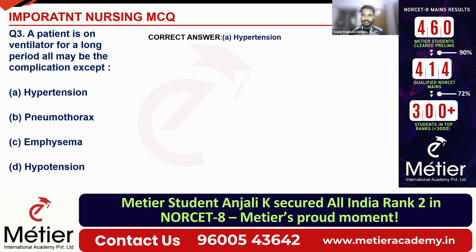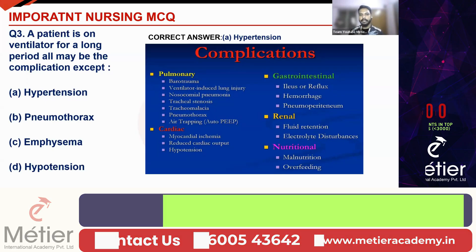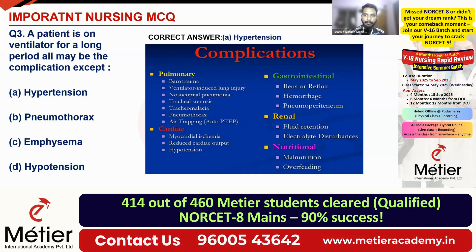Option B, pneumothorax: when the patient has been on a ventilator for a long time, there is a chance of air leakage into the pleural space, leading to pneumothorax. Option C, emphysema: ventilator-caused injury can lead to dilation of the alveoli, resulting in emphysema. These are the complications of long-term ventilation: pulmonary, cardiac, GI, renal, and nutritional complications. Option A — hypertension — is the exception; there is no hypertension when a patient is on long-term ventilation.